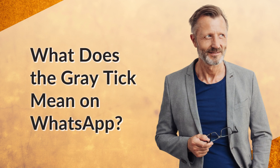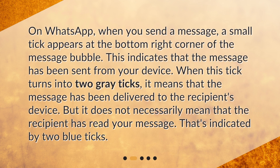What does the gray tick mean on WhatsApp? When you send a message, a small tick appears at the bottom right corner of the message bubble. This indicates that the message has been sent from your device. When this tick turns into two gray ticks, it means that the message has been delivered to the recipient's device, but it does not necessarily mean that the recipient has read your message. That's indicated by two blue ticks.